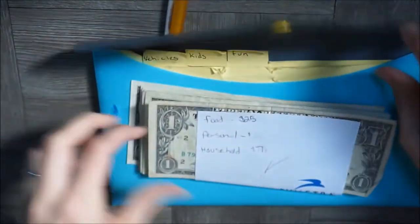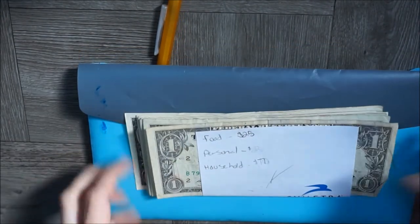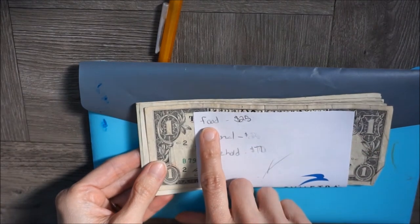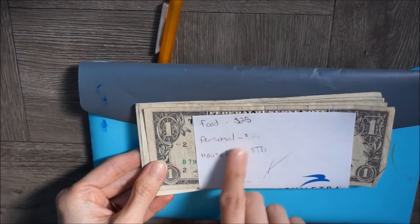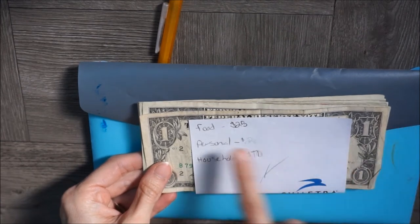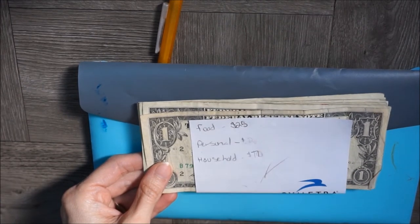And then how I kind of keep track within the cash envelope system here. So as you see, we got our cash here. So again, like I said, there's different areas. So we have our food, we have personal, and household is basically what's in our home category.